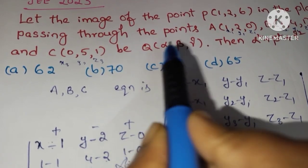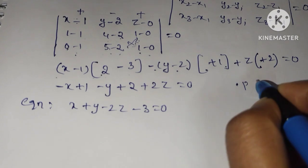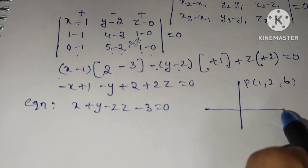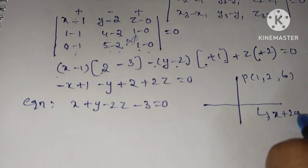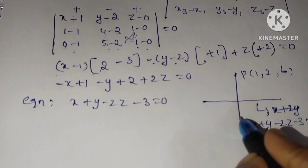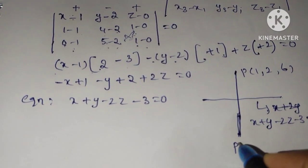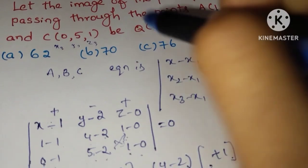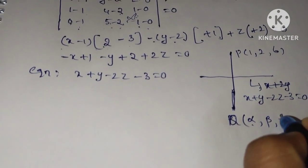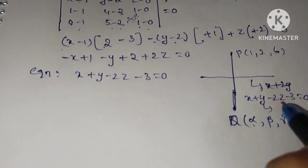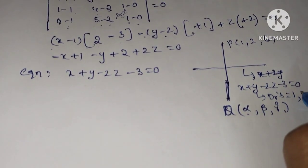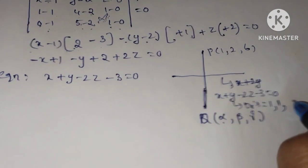Going back to the question: the point P(1,2,0) has its image as Q in this plane x + y − 2z − 3 = 0. The image of P is Q with coordinates (α, β, γ). For the line through P perpendicular to the plane, the direction ratios are the coefficients: 1, 1, −2.